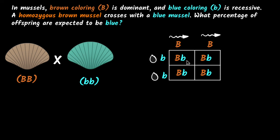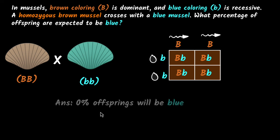And therefore, what do you end up with? Since capital B is dominating, all of these will end up giving you brown mussels. And therefore, you get 100% brown mussels, but what is asked is what is the percentage of blue? Well, if everything is brown, then you get zero blue. So the answer is 0% offsprings will be blue.